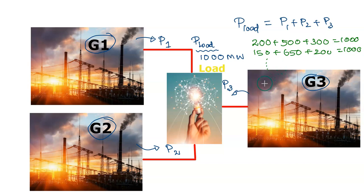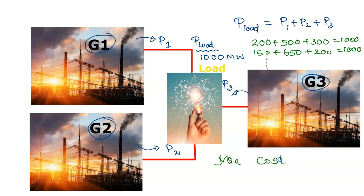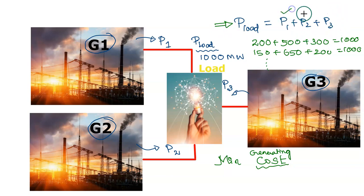So how do we decide the final solution — how much power should be generated at each station to meet the load demand? The main objective is to minimize the overall production cost of the power. The objective of this problem is to minimize the total generating cost, and the main constraint is that the total load demand should be met by the sum of power generated by all three generating units.